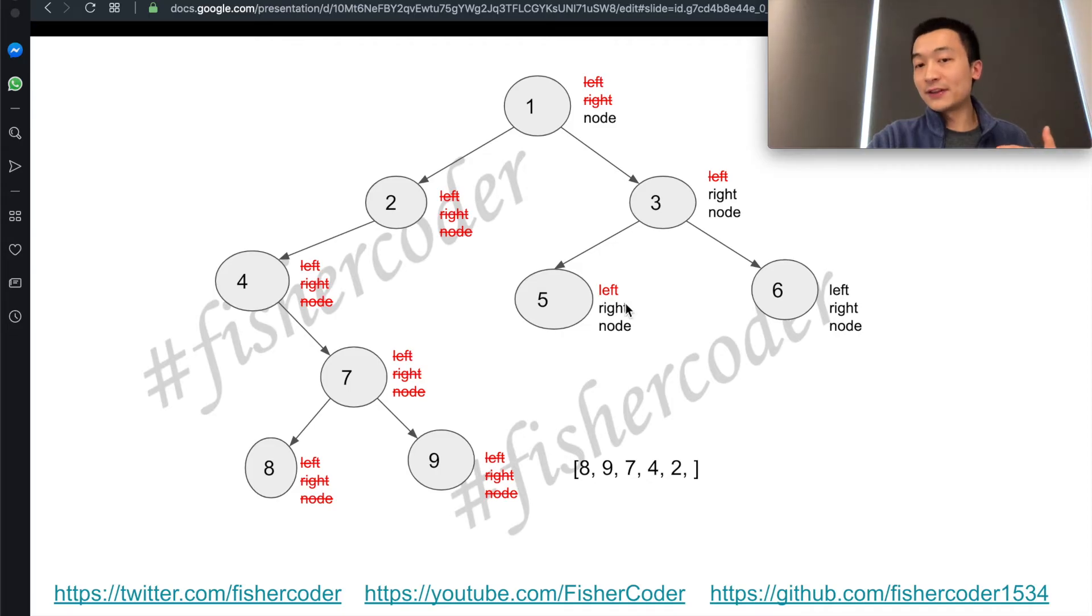5 doesn't have left or right. So left, right, doesn't have anything. Then we'll add 5 into this list. And then it comes back to right.